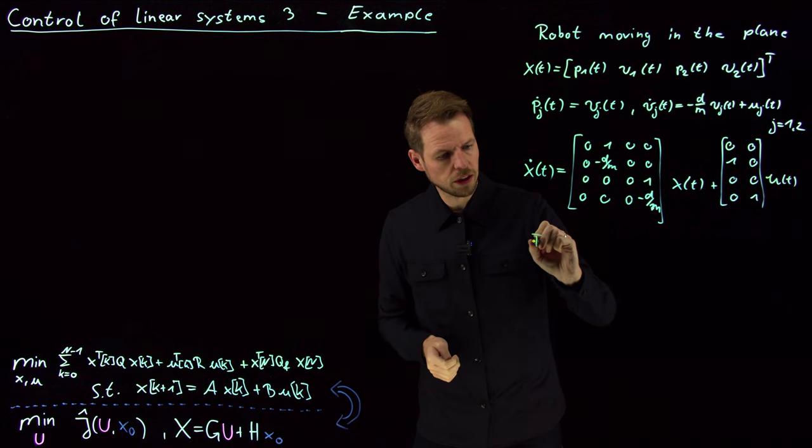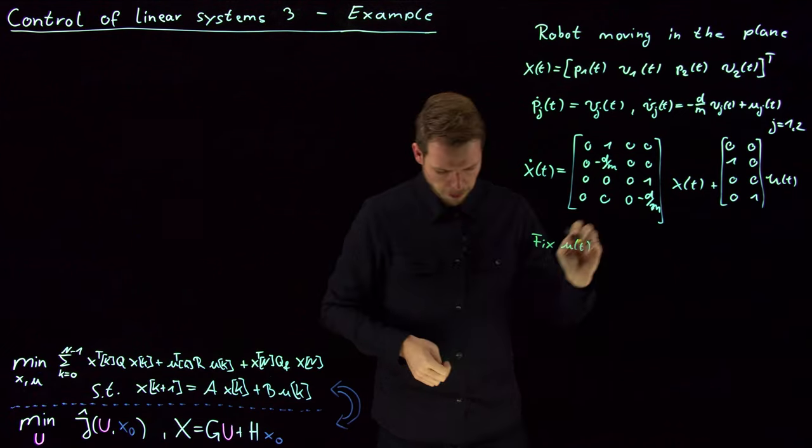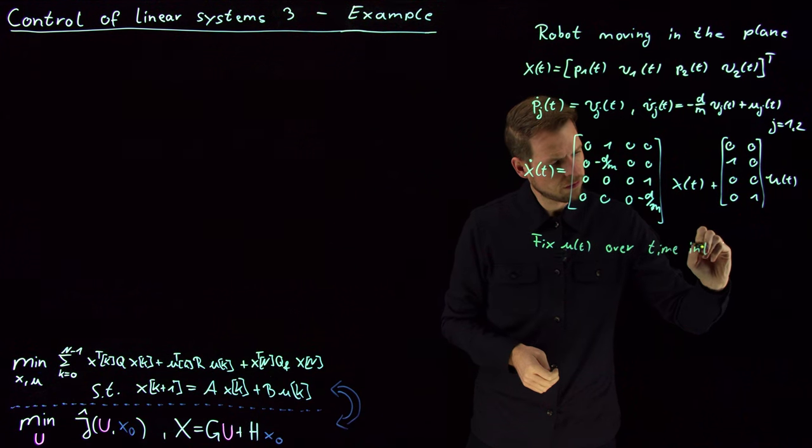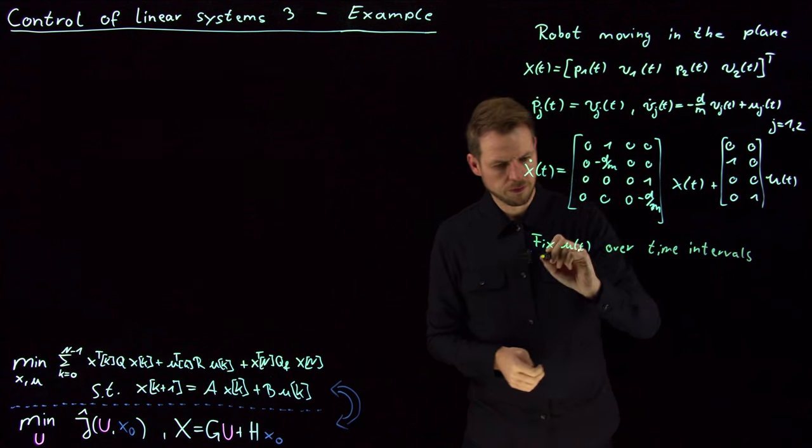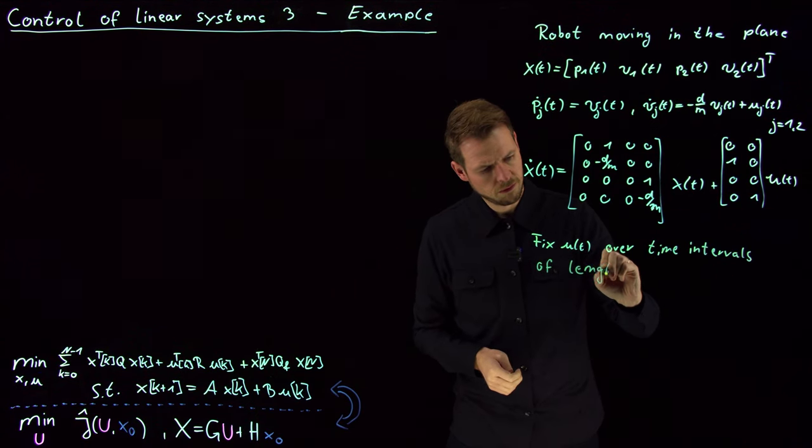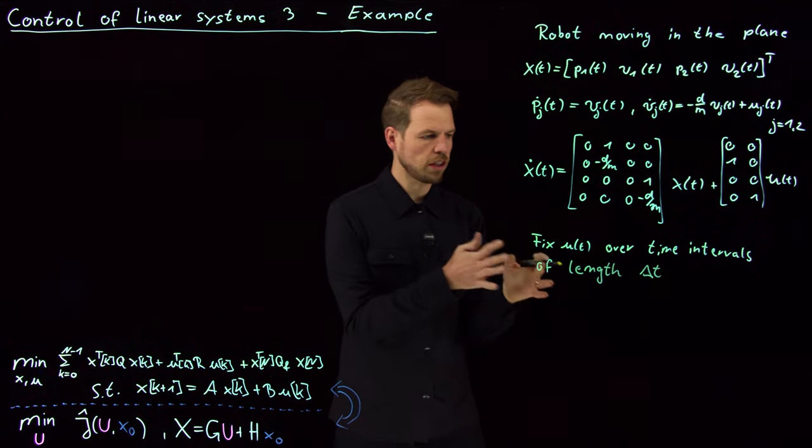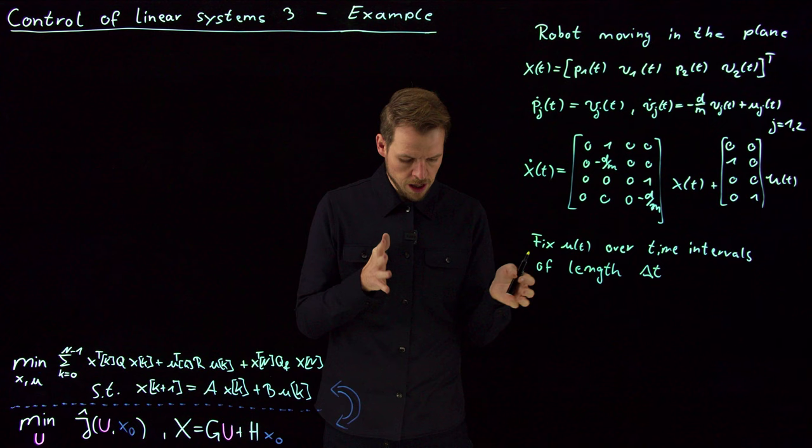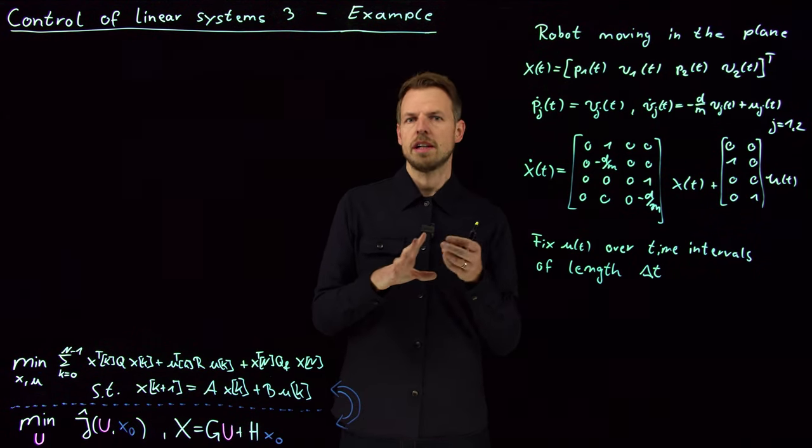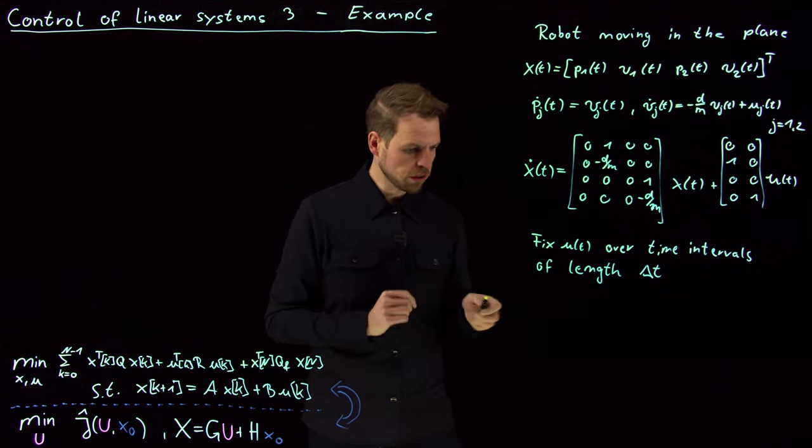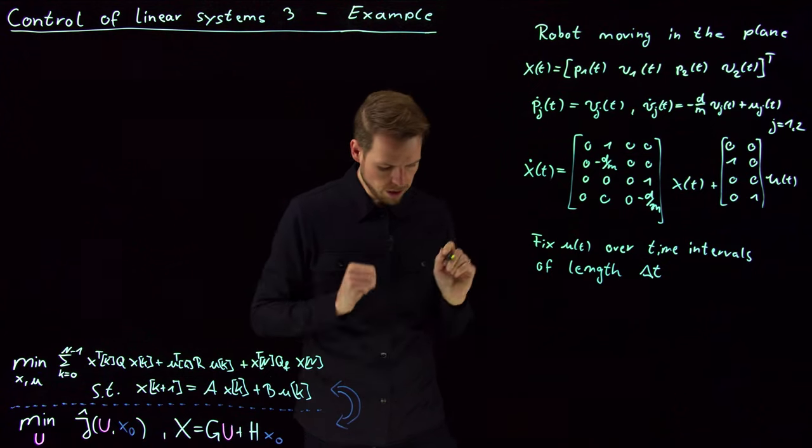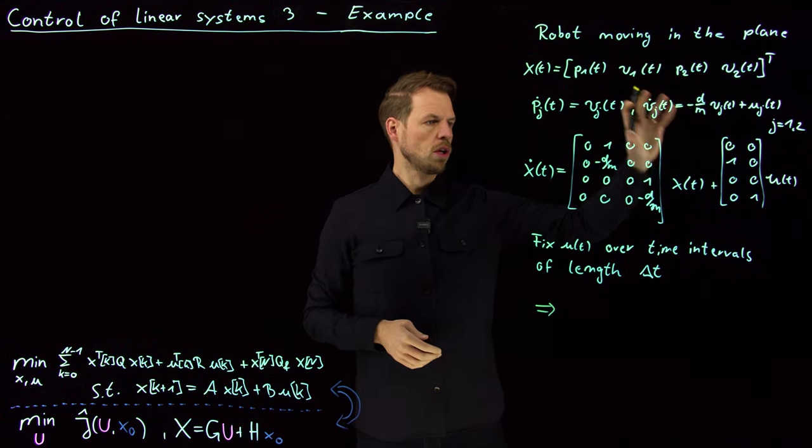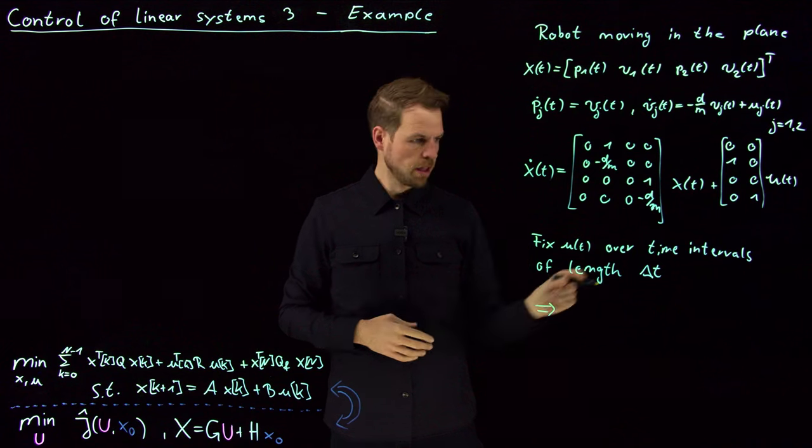It's in continuous time, so we're not quite there yet. What we simply need to do is we need to fix u of t over time intervals of length delta t. So we introduce a time discretization by this delta t and we assume we fix the input over these time instances. This will allow us, we had this in the dynamical system section of this course, to use laws like matrix exponential to derive a discrete time version of the system given these time steps.